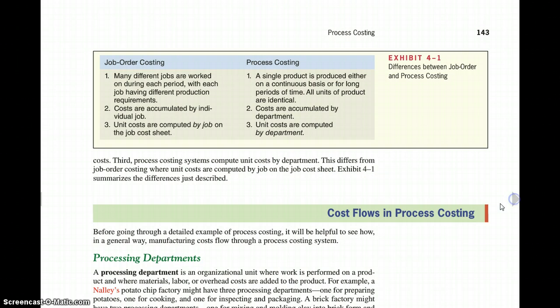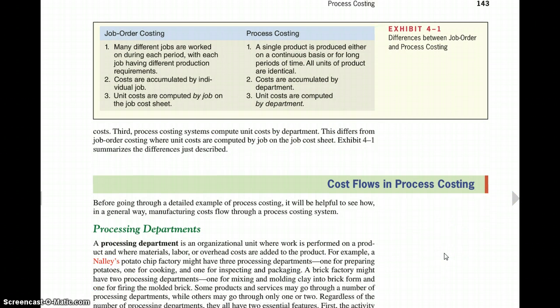There are some differences, and here are some differences in this Exhibit 4-1. A single product is produced either on a continuous basis or for long periods of time. All units of the product are identical. Costs are accumulated by department, and unit costs are computed by department. And that's different because in the job costing, we would do it by job, and we would have job costing sheets, but now we're going to have processing departments, and we're going to collect the different costs in the processing departments.